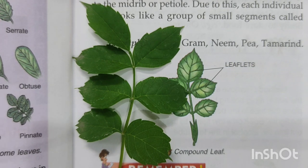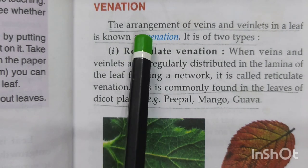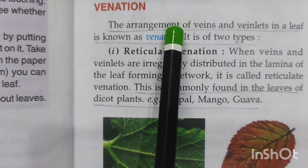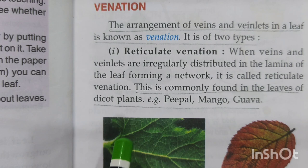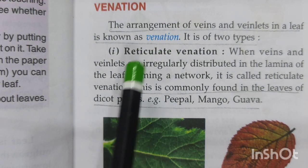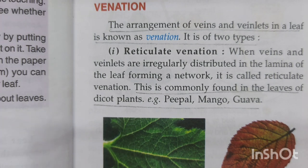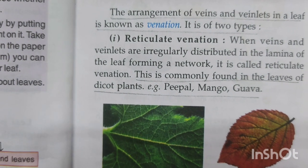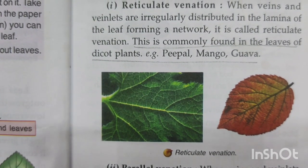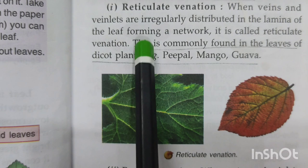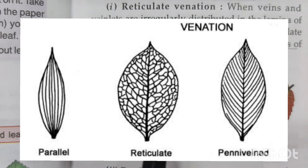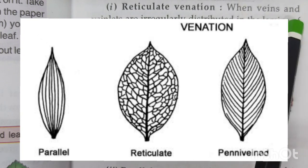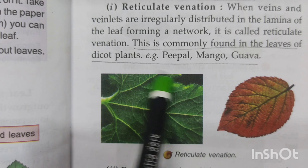Next we come to venation. The arrangement of veins and veinlets in a leaf is known as venation — how the veins and veinlets are arranged in a leaf. Venation is also of two types: reticulate venation and parallel venation. In reticulate venation, the veins and veinlets are irregularly distributed, meaning they form a complete network, as you can see in this picture.